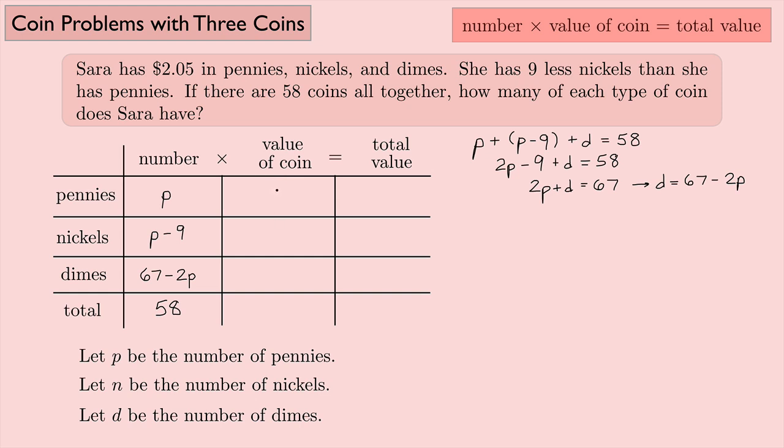The value of each coin, that's easy. For pennies that's 1, nickels that's 5, and dimes that's 10. Don't need to put anything here. And the total value, I just multiply these together. 1 times P, that's just plain old P. 5 times P minus 9 will go here, and 10 times 67 minus 2P will go there. And the total value is 205. Remember, writing it in terms of cents, so $2.05 is the same thing as 205 cents.